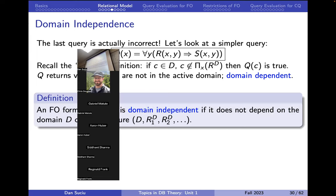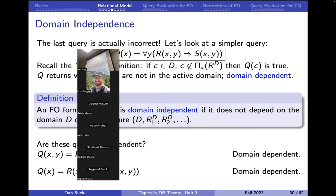We gave a definition: a formula is domain-independent if it doesn't depend on the domain D, only on the relations in the data — which is what one expects. These two queries were domain-dependent for different reasons. The first one can return infinite sets: if x is one of the elements not in your finite relation r, you're free to take any element, and if the domain is infinite, you might get an infinite set of answers.